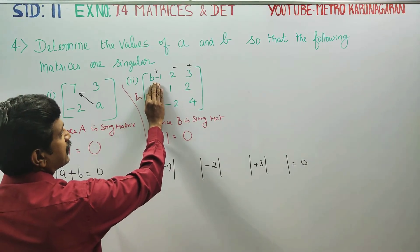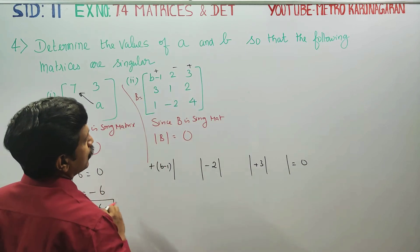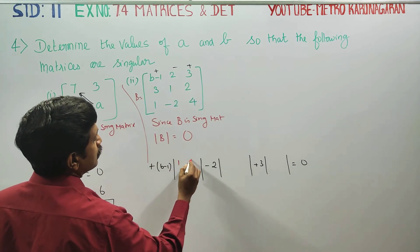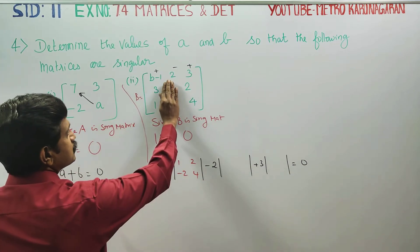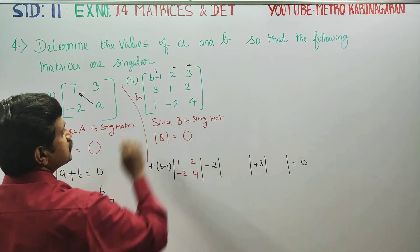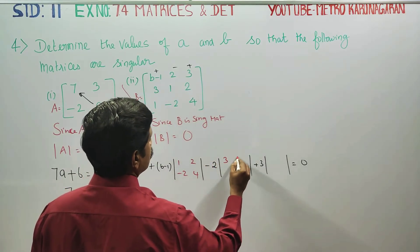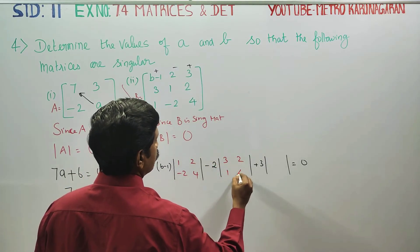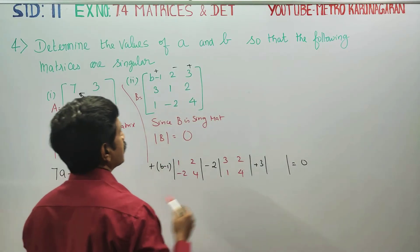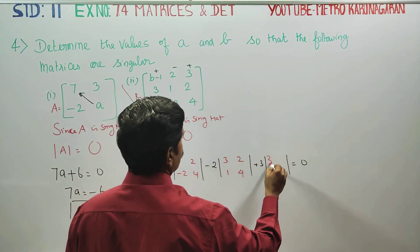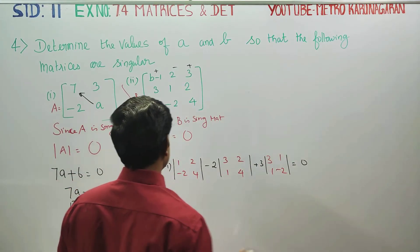The minor of (B minus 1) is the 2×2 determinant: 1, 2 / minus 2, 4. The minor of (minus 2) is: 3, 2 / 1, 4. The minor of 3 is: 3, 1 / 1, minus 2.